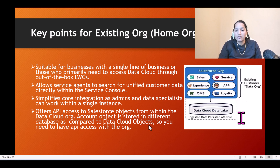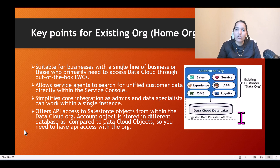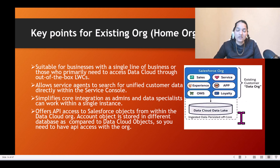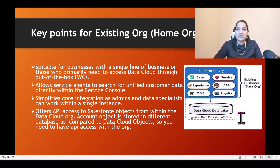Just because data cloud is enabled in the same org as your Service Cloud and Sales Cloud doesn't mean the databases behind the scenes are the same. Account objects, opportunities, and other objects related to sales, service, or marketing clouds are in a different database compared to data cloud objects — this is called off-core. That's why you need API access: even though data cloud is provisioned in the same org, the databases are completely different, so API access is required to access data from data cloud objects.